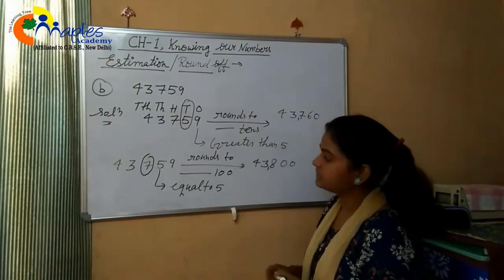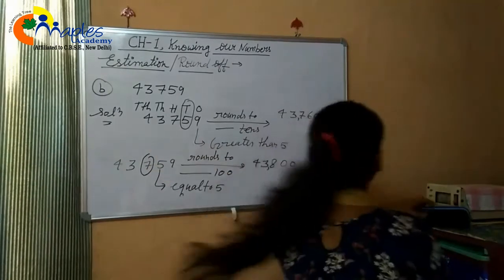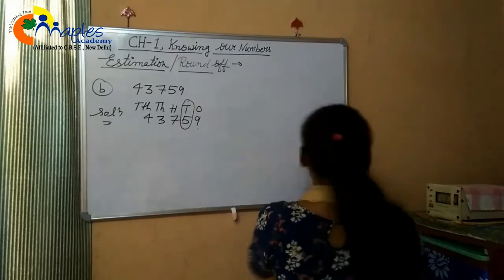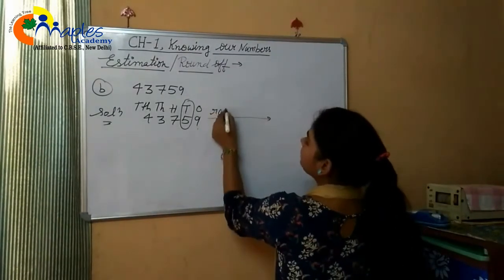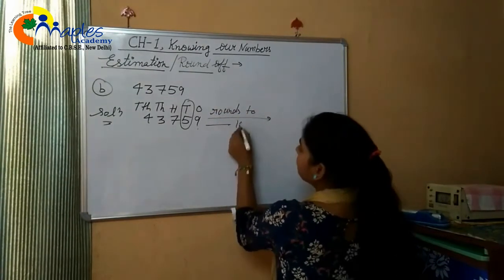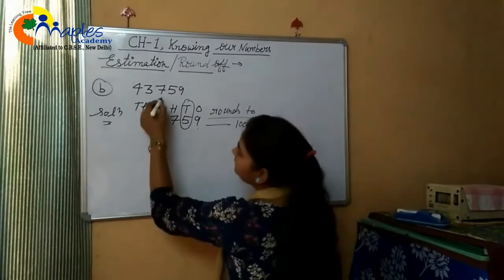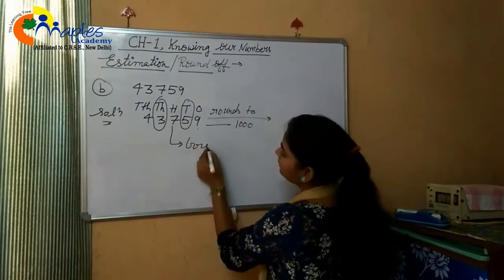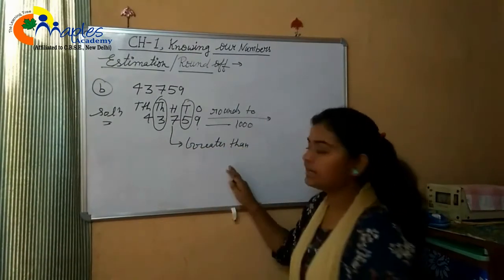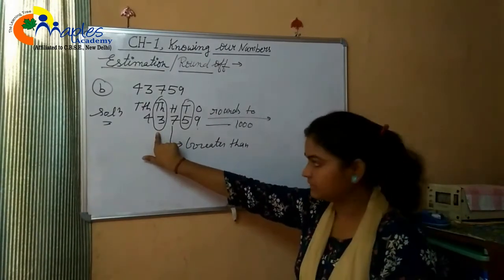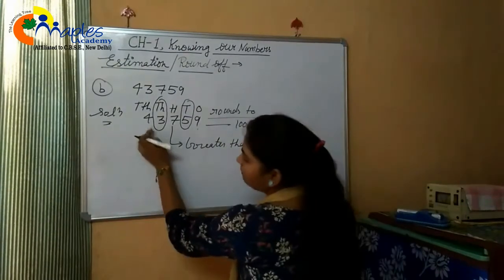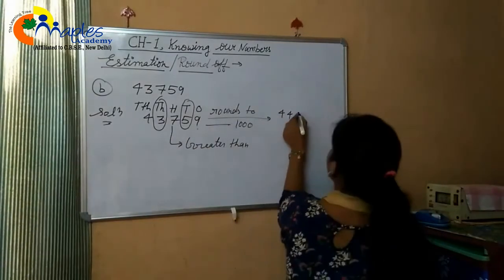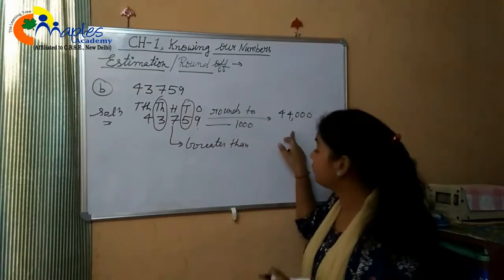Same number 43,759 — we round off to the nearest 1,000. The thousands digit is 3; the hundreds digit is 7, which is greater than 5. So 3 plus 1 equals 4, and the next three digits become zeros. The number is 44,000.